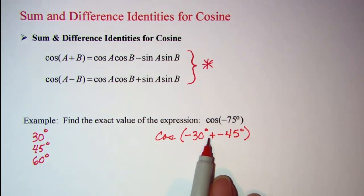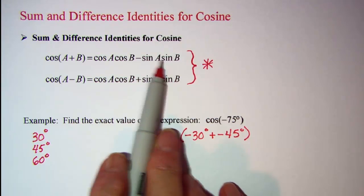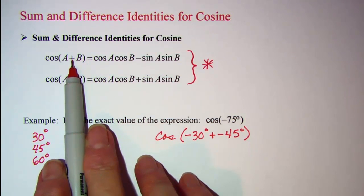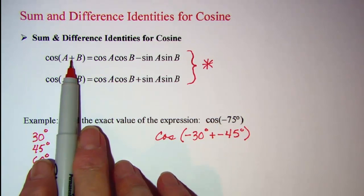So that means that we'll be using the cosine of a sum and that's our first identity right here. And we can see that from this identity, if we want to find the cosine of A plus B,